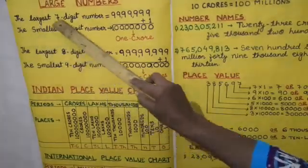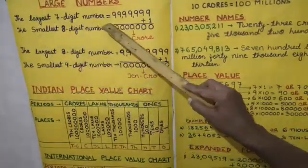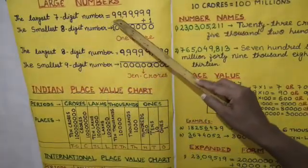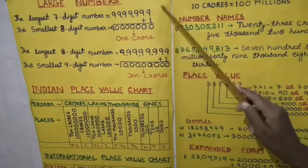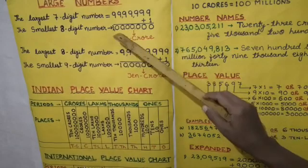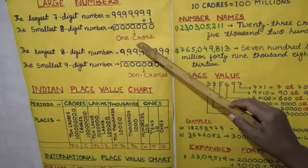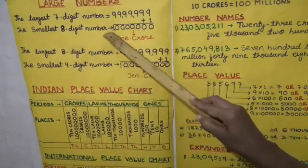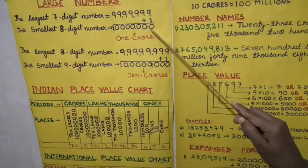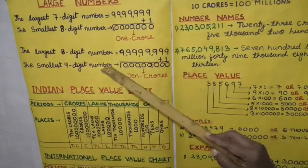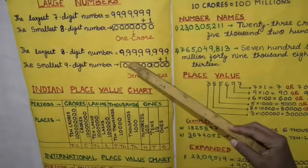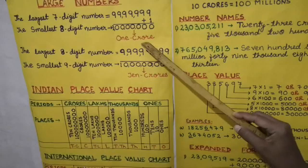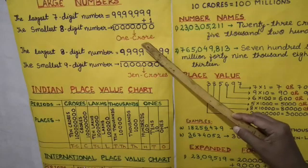We know that the largest 7-digit number equals 99,99,999. On adding 1 we get 1 crore. The smallest 8-digit number equals 1 crore, and the eighth place is called the crore's place. We may now extend the place value chart to 8 places.